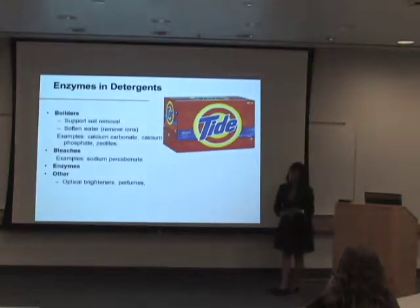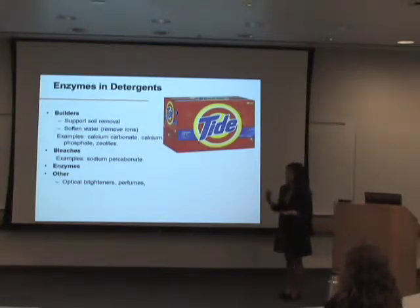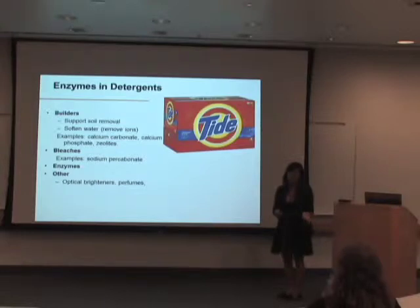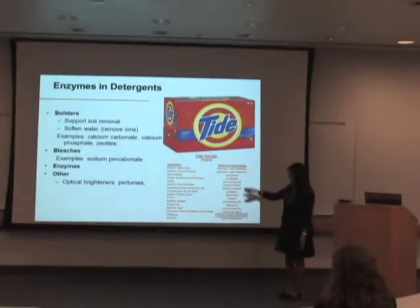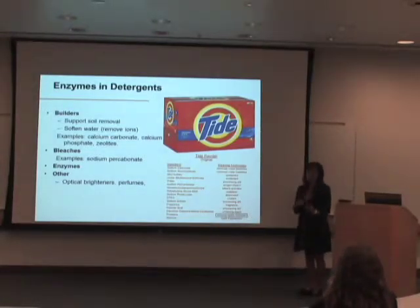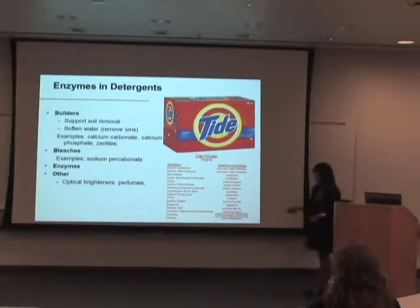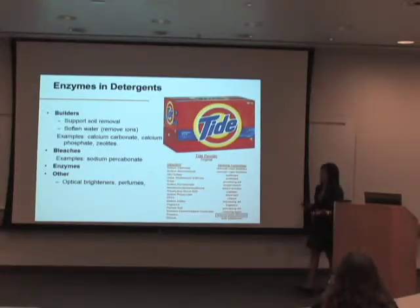In detergents nowadays, they all contain multiple things: soil removers, water softeners, fragrance for your clothes such as perfumes, optical brighteners to make the colors appear brighter, and the list goes on. But the main ingredient in detergents that will actually degrade a stain from your clothing is the enzyme — listed in parentheses as 'stain remover' — and that is what is mainly used to degrade a stain from your clothes.